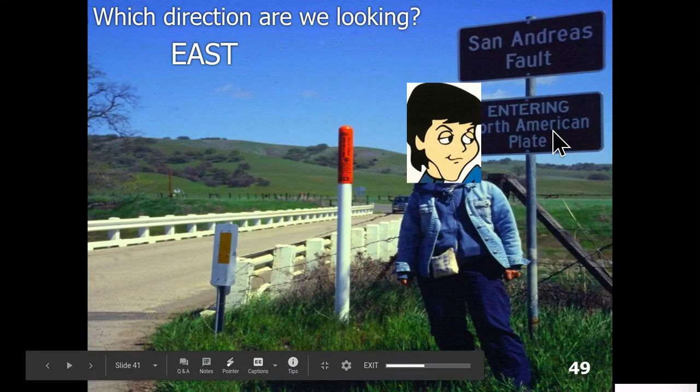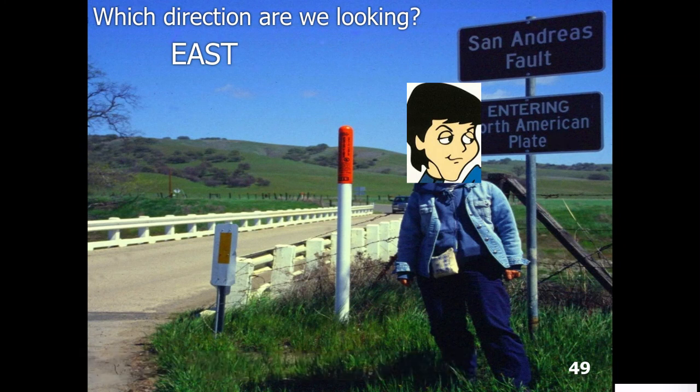Welcome to plate tectonics part four. This is the last part of the plate tectonics discussion. We've looked at the various boundaries — the divergent boundary and its characteristics, the convergent boundary with ocean-to-continent, ocean-to-ocean, and continent-to-continent convergence, and the respective landforms that result from each one of those plate boundary interactions.